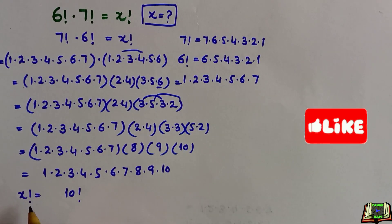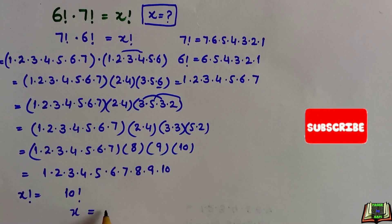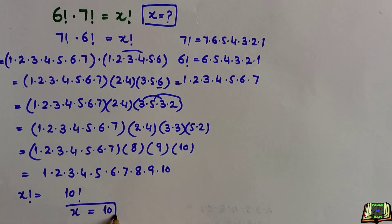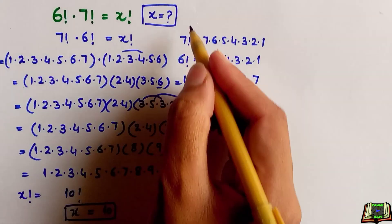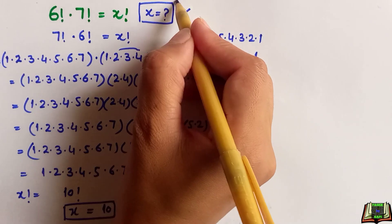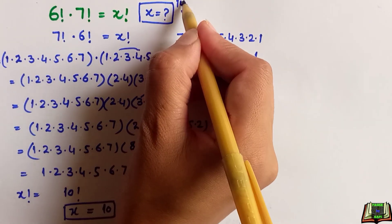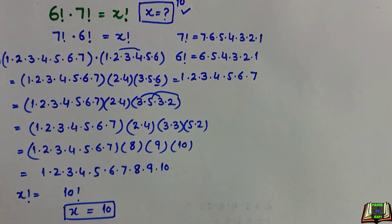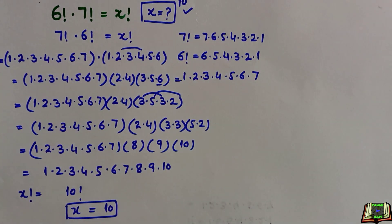Therefore x factorial equals 10 factorial, so x equals 10. I hope that is clear — if not, feel free to ask. See you next time, bye!